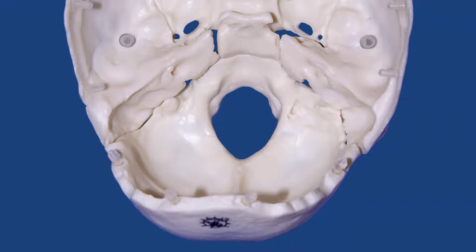Also, what you cannot see very well but which is present — if you look at the interior of the foramen magnum, you'll find in the walls that form the foramen magnum an opening that becomes a canal through which the 12th cranial nerve goes on its way to the tongue.